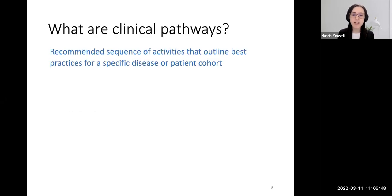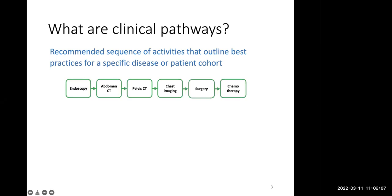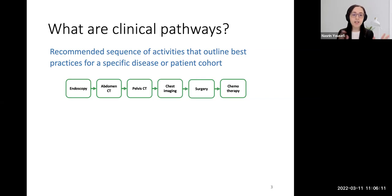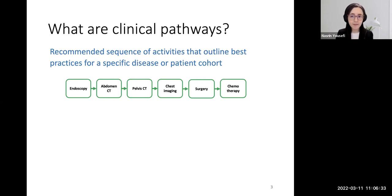Let's first see what is a clinical pathway. Clinical pathways are recommended sequences of activities that outline best practices for managing a specific disease or patient cohort. For example, here is a clinical pathway that is the diagnosis and treatment clinical pathway for stage three colon cancer. Patients should go through endoscopy, abdomen CT, pelvis CT, and all the way through chemotherapy.